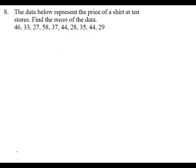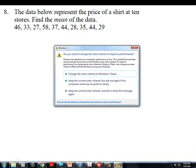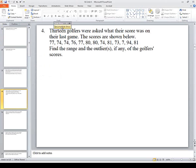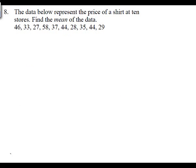The data below represents the price of a shirt in 10 stores. Find the mean. What do we have to do to find the mean? Add them all up and divide by the total number. Let me zoom in on that. So the idea is we're going to add them all together — if you haven't done that, start doing it in your calculator right now. And then how many total numbers are there? Ten. So I just want the final answer — no intermediate step.